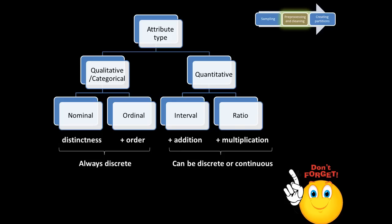Now we want to look at another important aspect about data types — especially how do you deal with qualitative or categorical data? In data mining, you are often talking about using quantitative techniques. Many of the techniques we are going to study will require all the variables to be numerical — for example, multiple regression requires everything to be a number. But not all variables are numerical; there are also qualitative or categorical variables. Quite a lot of information in data mining is actually categorical. So what do you do when you have to use categorical variables in quantitative techniques?